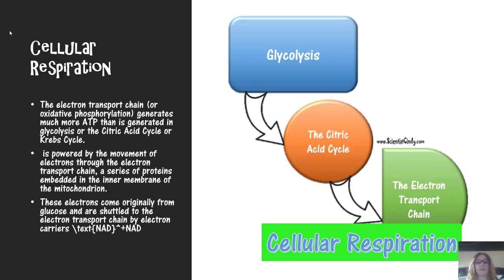The electron transport chain, otherwise known as oxidative phosphorylation, generates much more ATP than is generated in glycolysis or in the citric acid cycle. The electron transport chain is powered by the movement of electrons through a series of proteins embedded in the inner membrane of the prokaryote or in the inner membrane of the mitochondria. These electrons come originally from the glucose molecule broken down in glycolysis, and are shuttled to the electron transport chain using electron carriers such as NADH and FADH2.